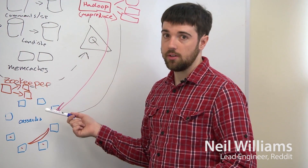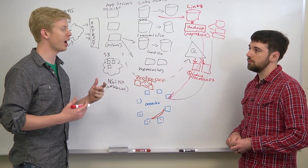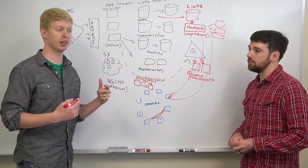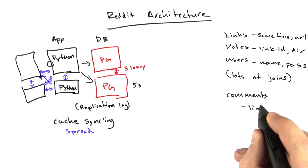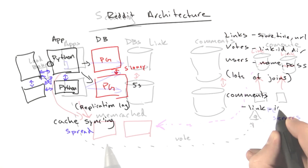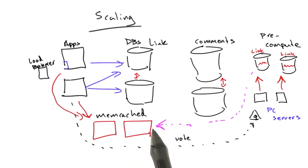I'm going to talk with Neil Williams, who's the current lead engineer at Reddit. We're going to discuss Reddit's architecture and how it serves billions of pages per month. It's quite a bit different from the sort of stuff we've been working on so far in this class, but you'll see how we got there.